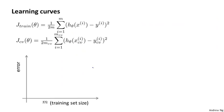Here's what a learning curve is. To plot a learning curve, what I usually do is plot J_train, which is the average squared error on my training set, or J_CV, which is the average squared error on my cross-validation set. And I'm going to plot that as a function of M — that is, as a function of the number of training examples I have.